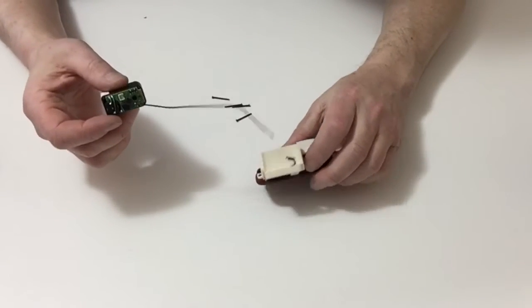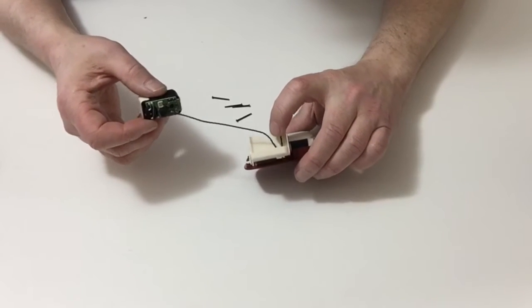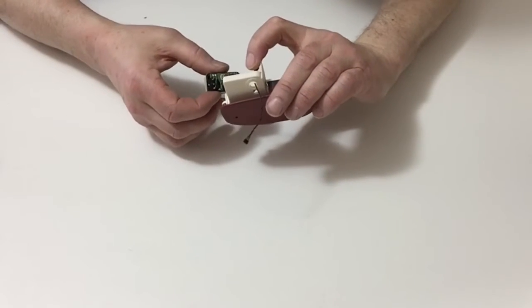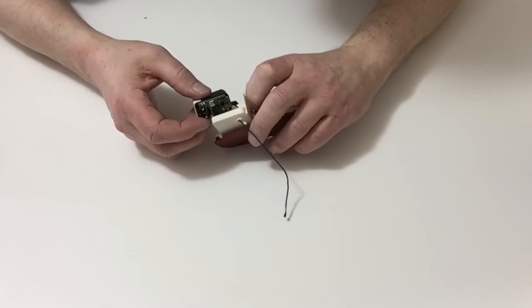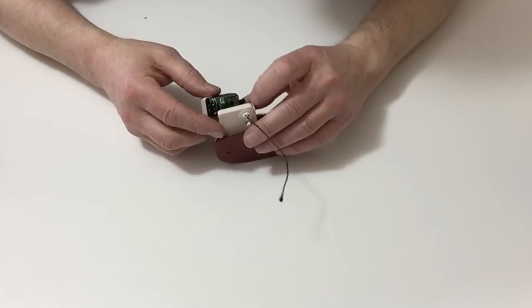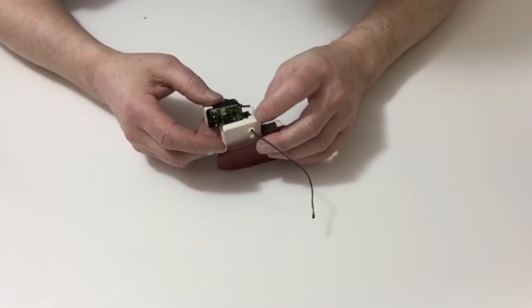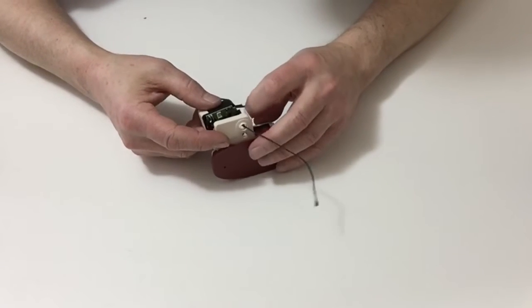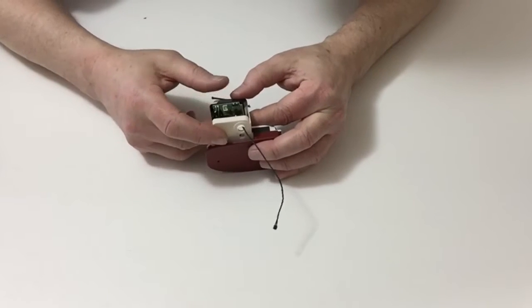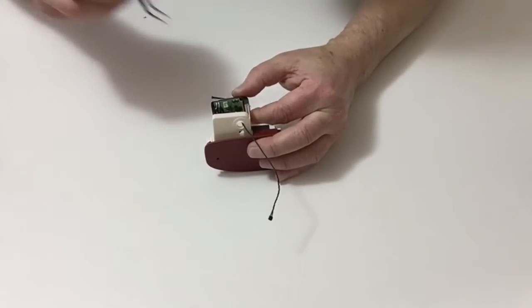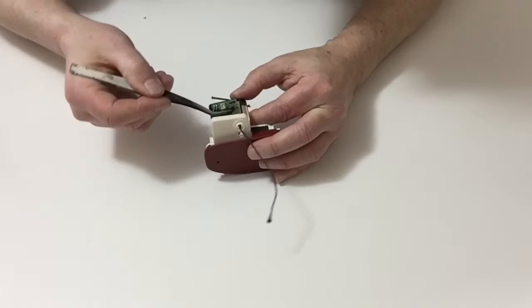Take the cable and feed that through the inside so that the cable comes out of the back of the hole like so. Take the servo and then carefully connect up the cable that we pulled through earlier onto the back of the servo. You may need some tweezers for this.